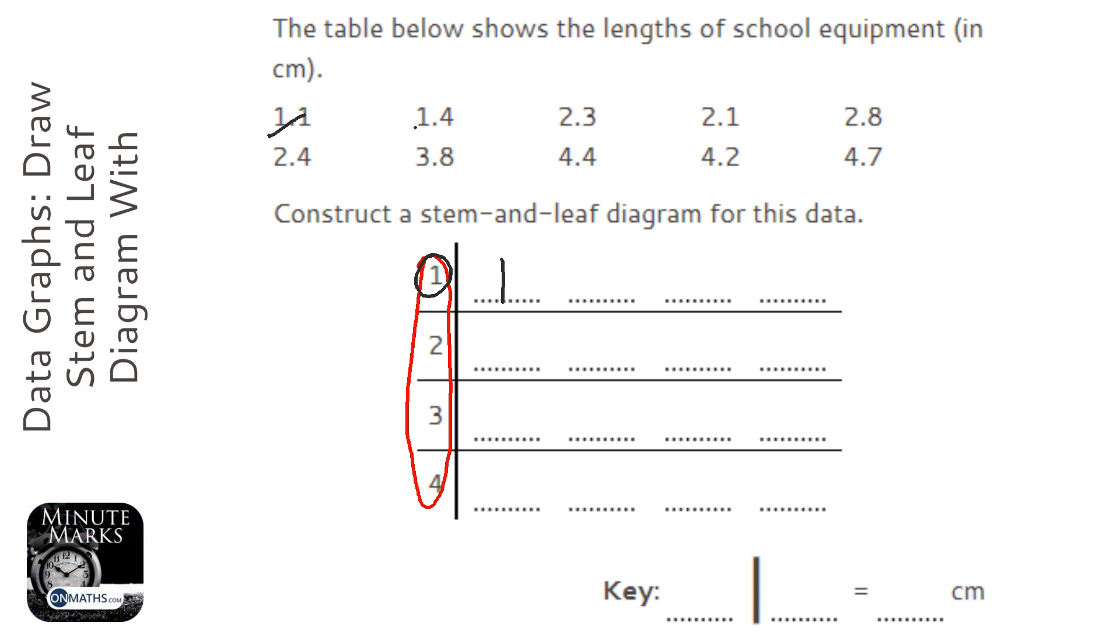Then the next one is 1.4, so the 4 goes there. The next ones are 2.1, 2.3, 2.4, and 2.8.